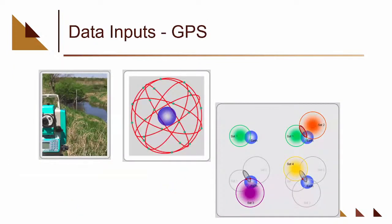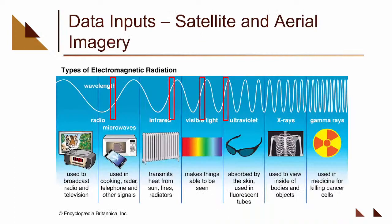Data inputs to a GIS: field data collection with GPS units is probably the most commonly used method of getting data into a system. The second commonly used way is either satellite imagery or aerial photography. Our historical paper maps were typically generated from aerial sources — they would fly a plane, take pictures, come back, collect those pictures together, trace on top of them, and get digital data. Today we have tons of satellites collecting data.